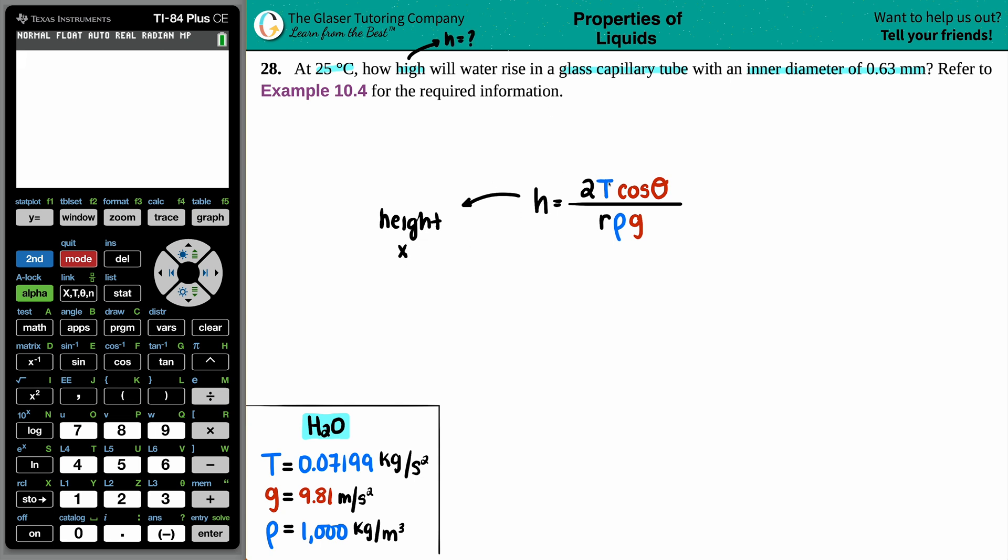This is what we don't know, which means we should know everything else here. H equals two times T. Capital T is not temperature, so that's why they threw in 25 degrees Celsius here to try to trick you. But T in this capillary action formula is surface tension, and that is the T for water that I put down below here. I converted it for you in the correct units. In this formula we have to use kilograms, seconds, and meters. For T, surface tension is 0.07199. The units, if we want to know them, are kilogram per second squared.